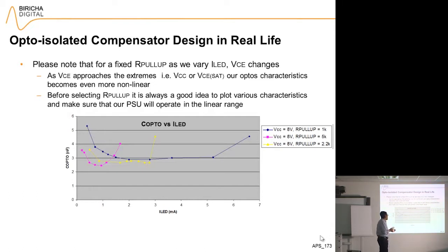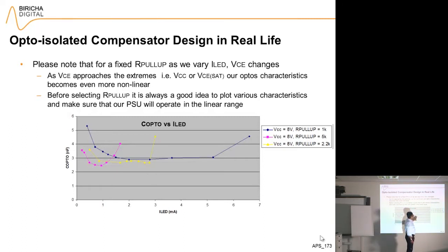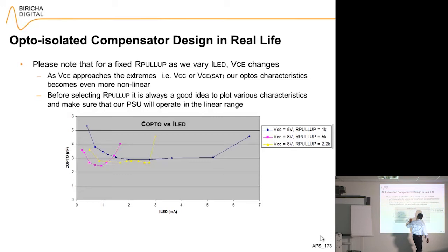As you can see from this slide, I took a standard optocoupler and changed the value of the pull-up resistor. 1k is the blue line, 5k is the pink line, and 2.2k is the yellow line.